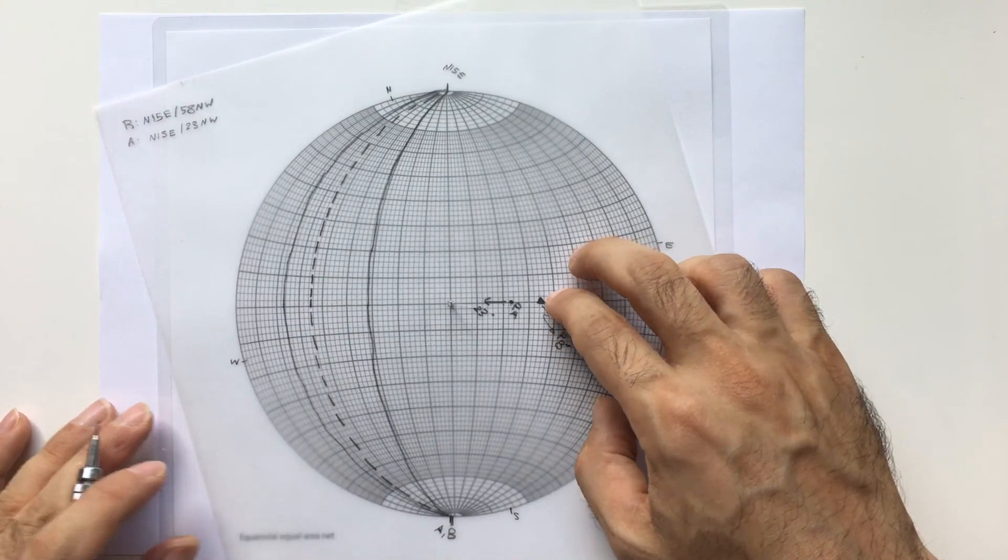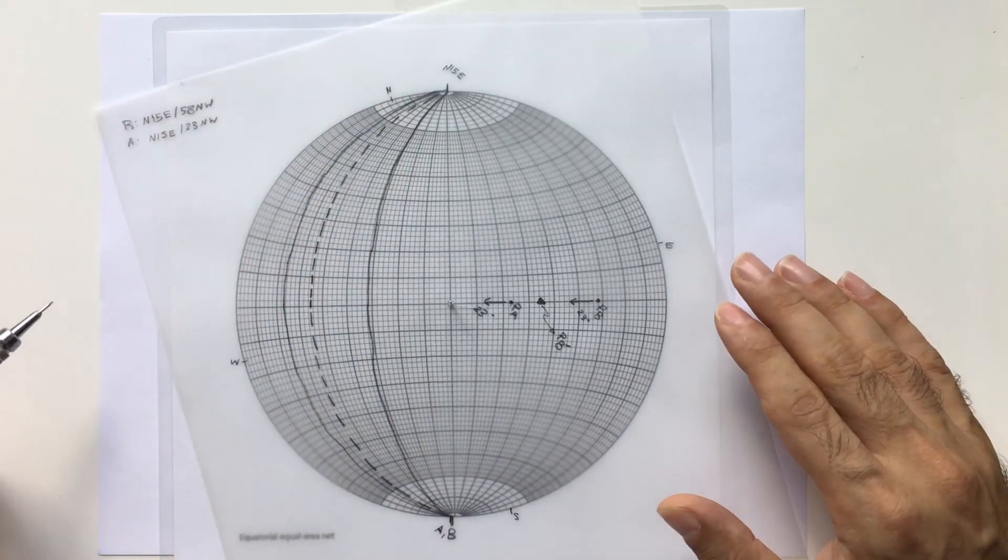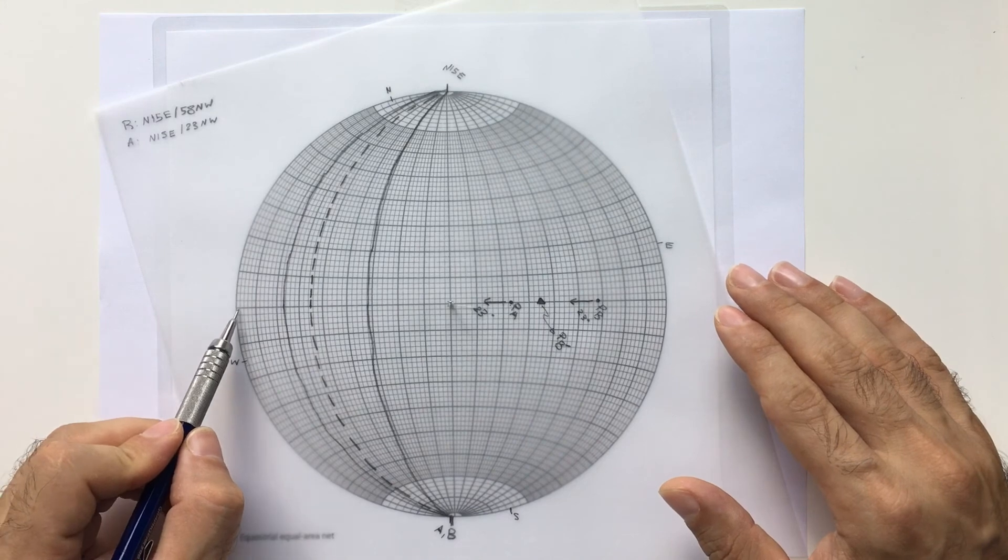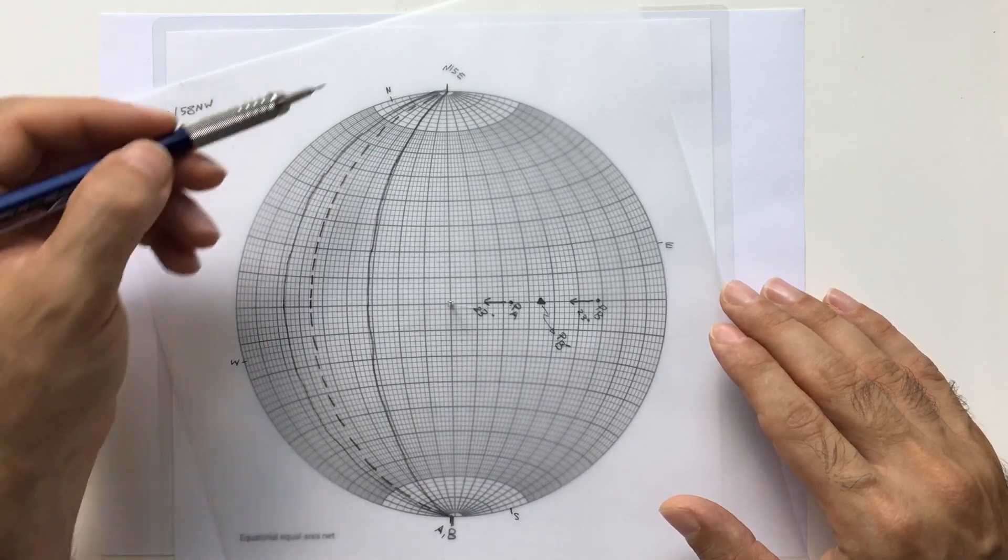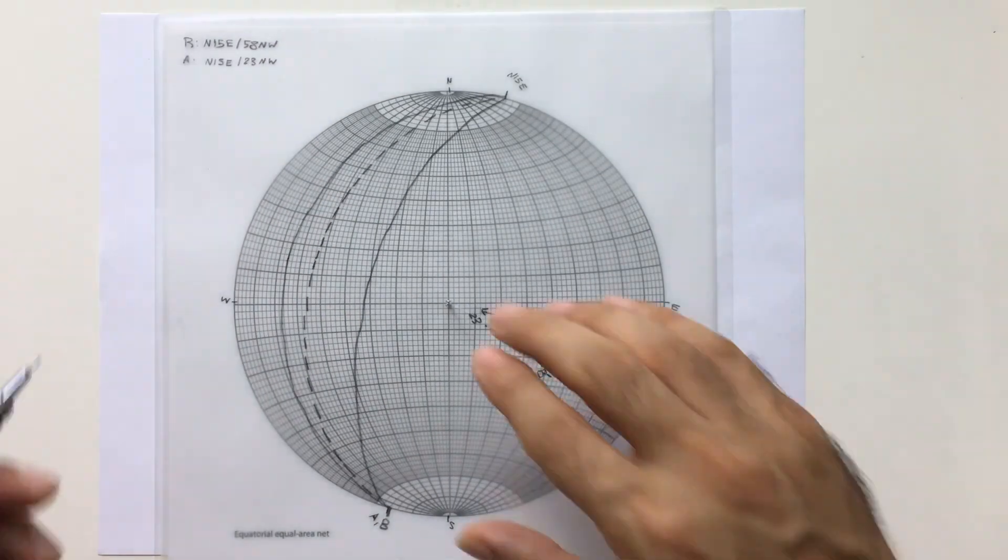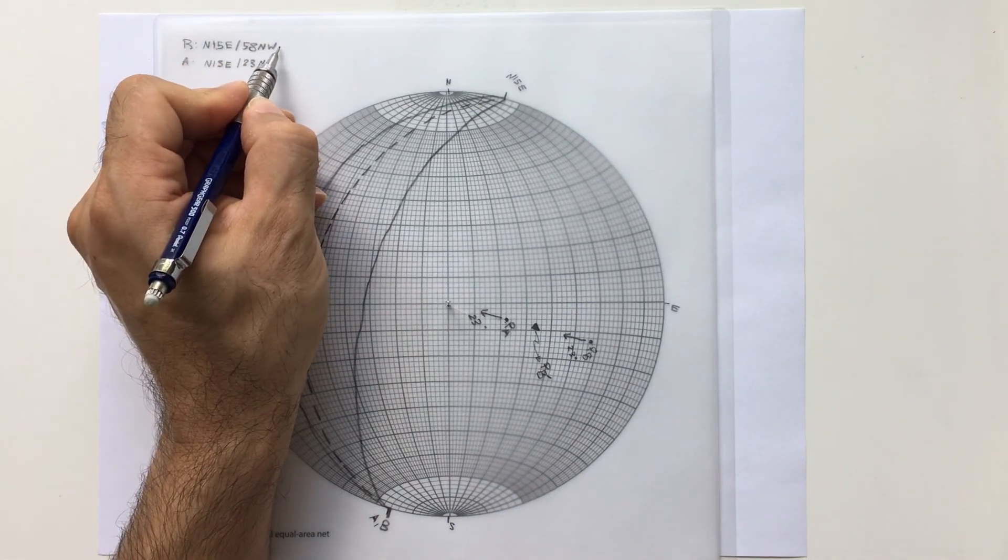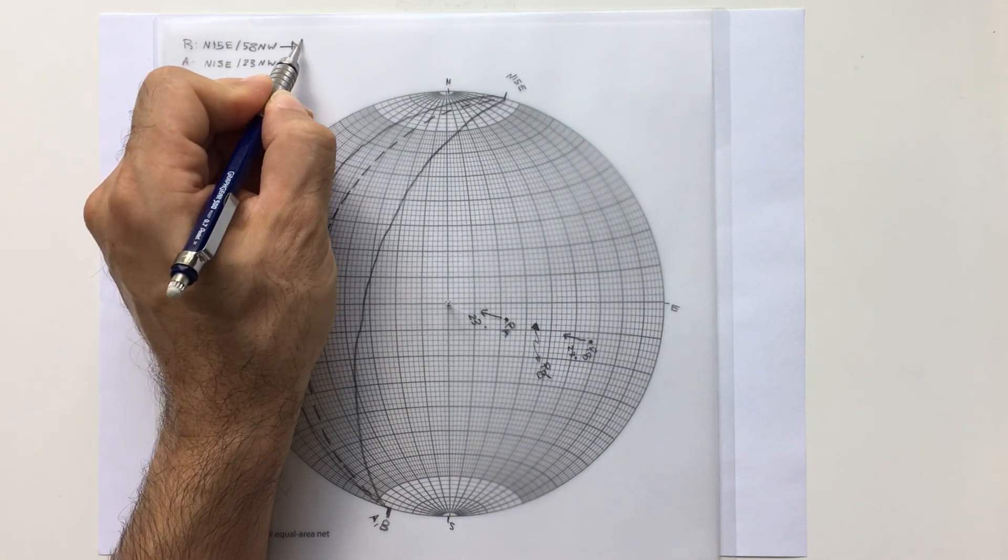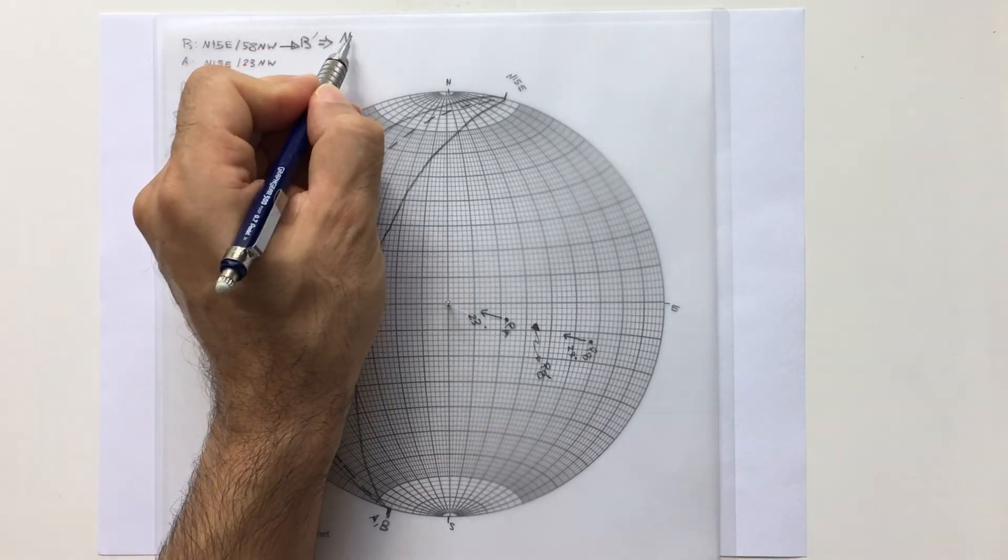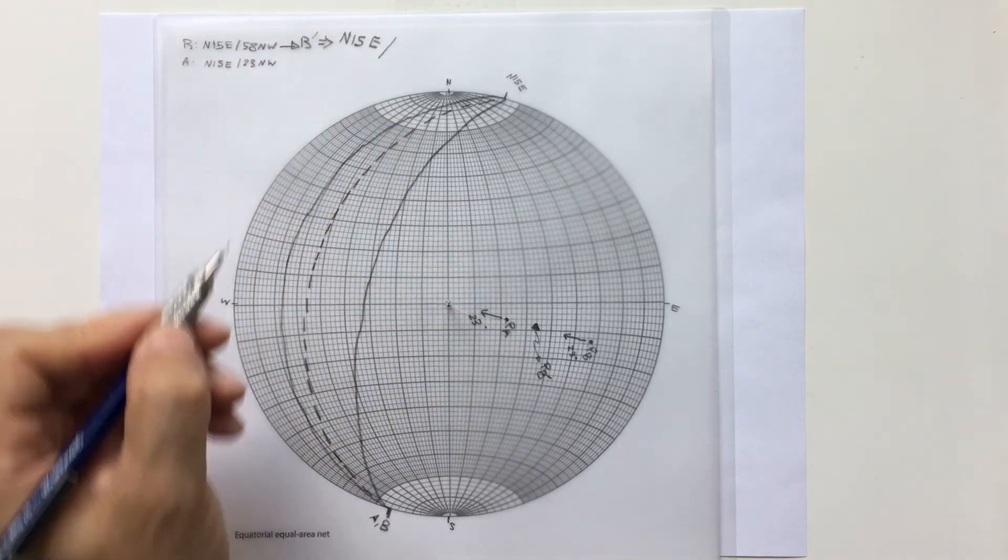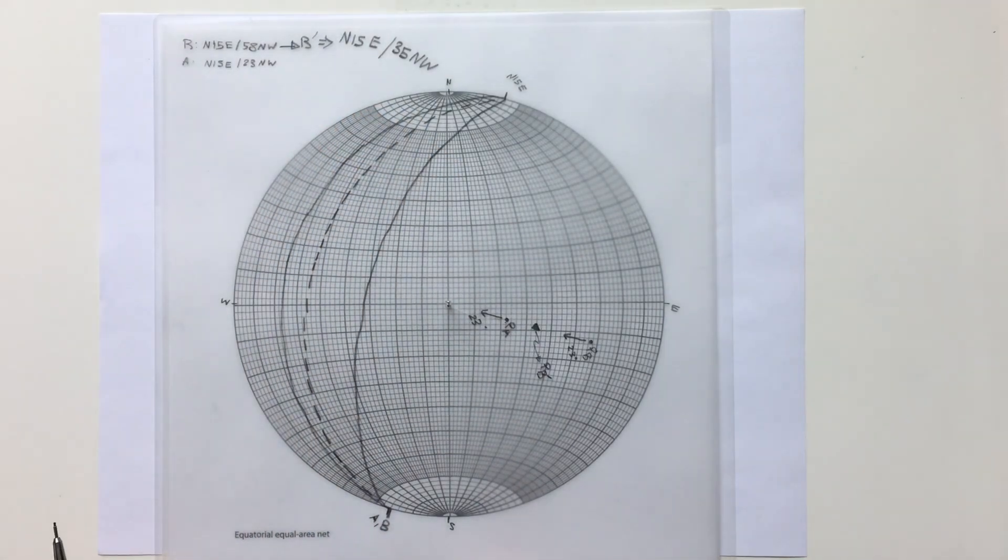So what is the attitude of this dash line? Strike didn't change, it's N15E, and the dip is 10, 20, 30, 35 from northwest. So the attitude after the first tectonic phase, I'm going to call it B prime, and that one is equal to N15E/35NW. That's it.